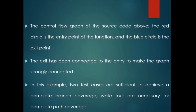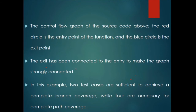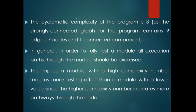In the control flow graph for this source code, the red circle is the entry point and the blue is the exit. The exit has been connected to the entry to make the graph strongly connected. In this example, two test cases are sufficient to achieve complete branch coverage, while four are necessary for complete path coverage. The cyclomatic complexity of this program is 3, as the strongly connected graph has nine edges, seven nodes, and one connected component: 9 − 7 + 1 = 3.